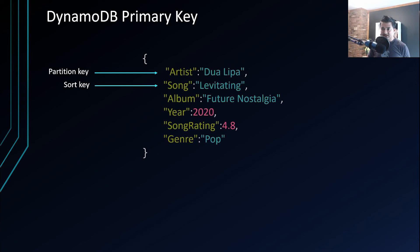For example, in a table storing artist and song information, the combination of artist and song attributes makes each item unique. So artist is the partition key and song is the sort key.